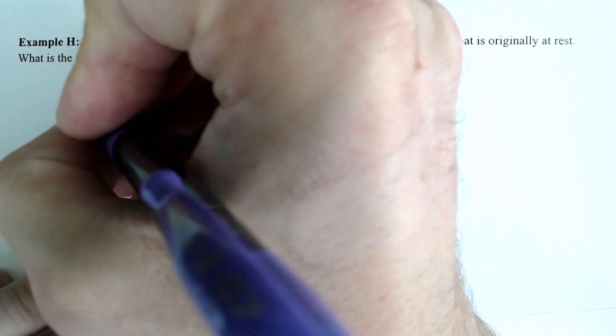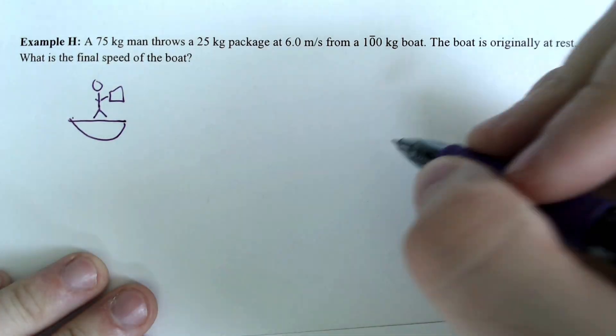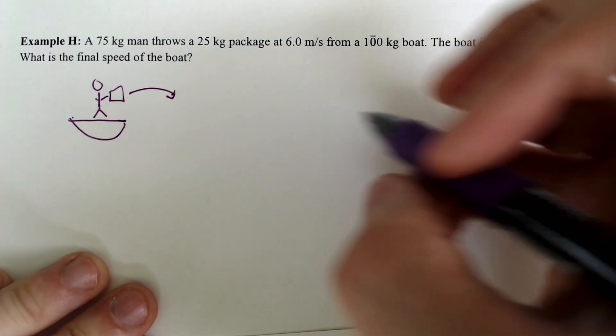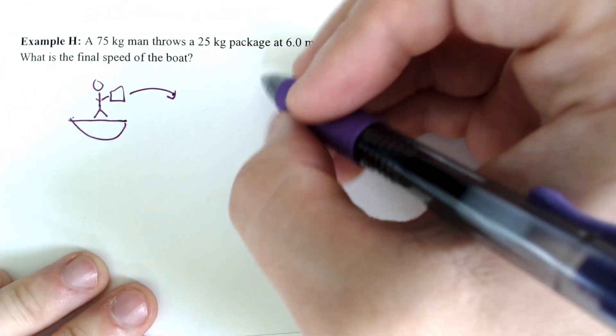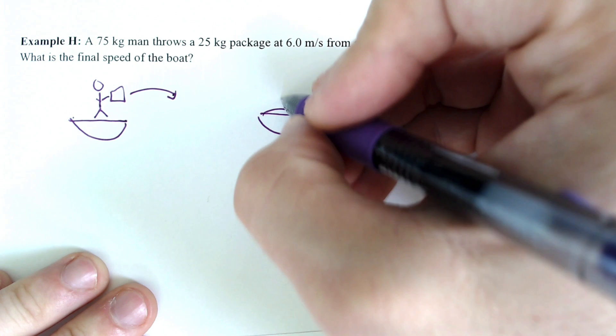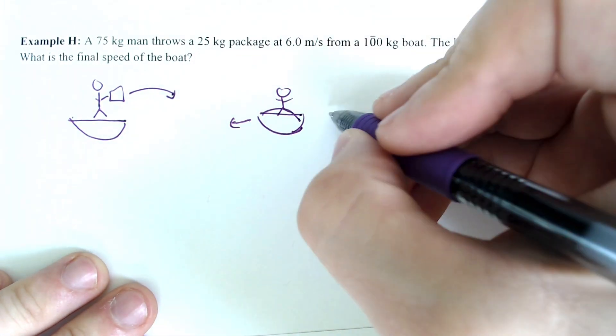So essentially, what we have here is we got this guy on a boat, and he's got a box. When he throws that box this direction,